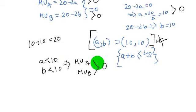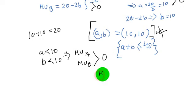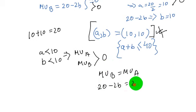Thus the equilibrium bundle will be satisfied by equating MUB is equal to MUA or vice versa as you wish. Therefore 20 minus 2B equals to 20 minus 2A.